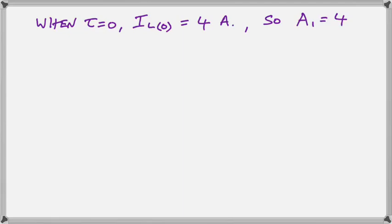So when T equals zero we know what the current through the coil is going to be. It's going to be 4 amps and therefore that automatically makes A1 equal to 4.